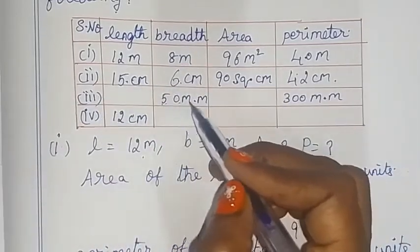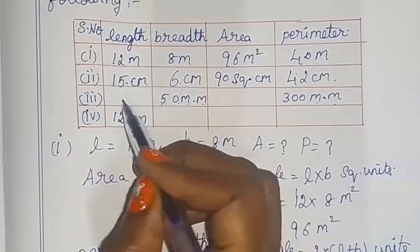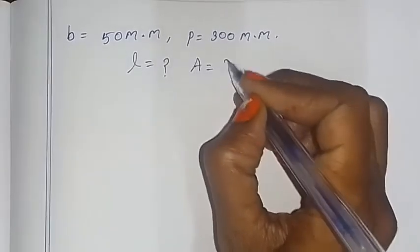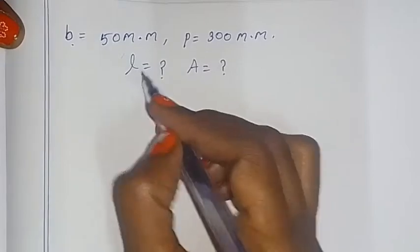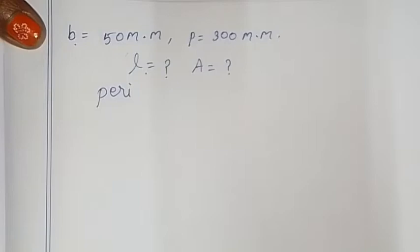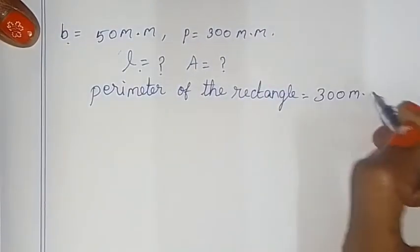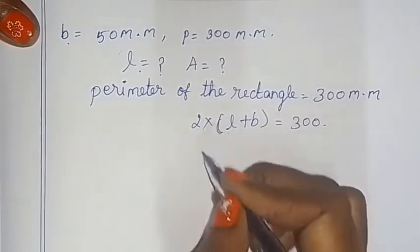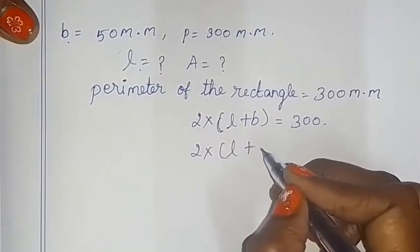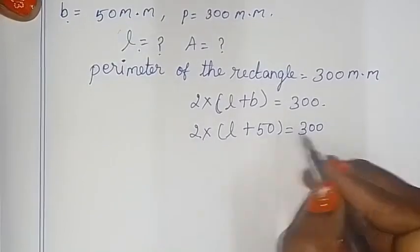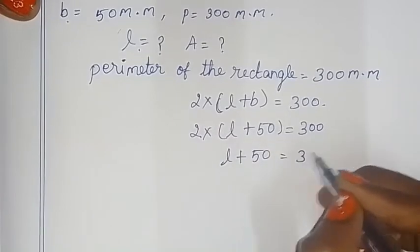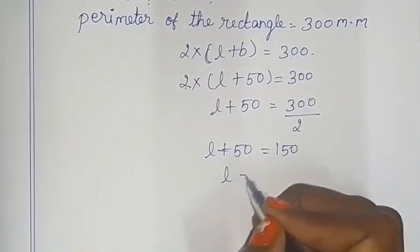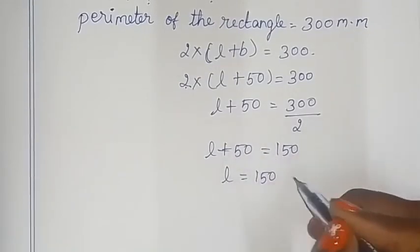In the third rectangle, the breadth is 50 mm and the perimeter is 300 mm. We need to find the length and area. Perimeter = 2 into (L + B) = 300 mm. So 2 into (L + 50) = 300. L + 50 = 150, so L = 150 - 50 = 100 mm.